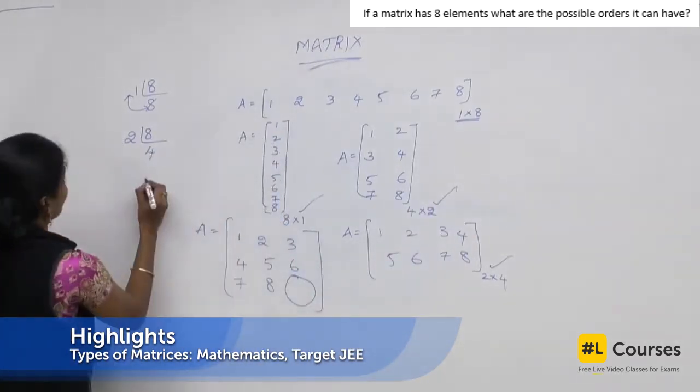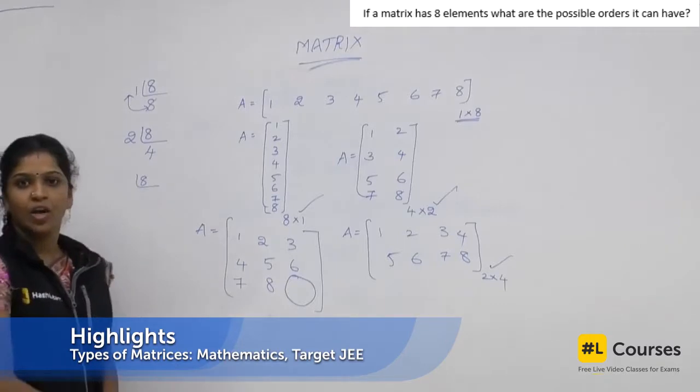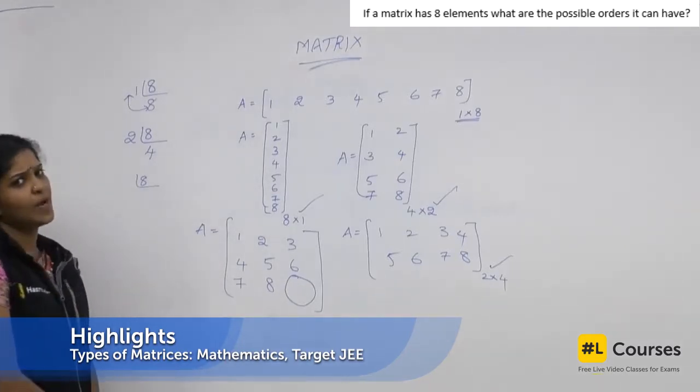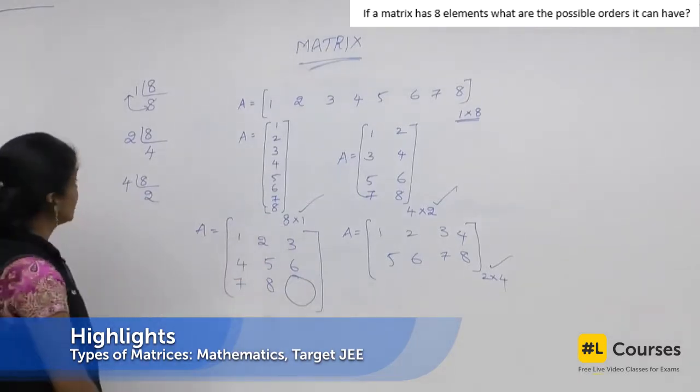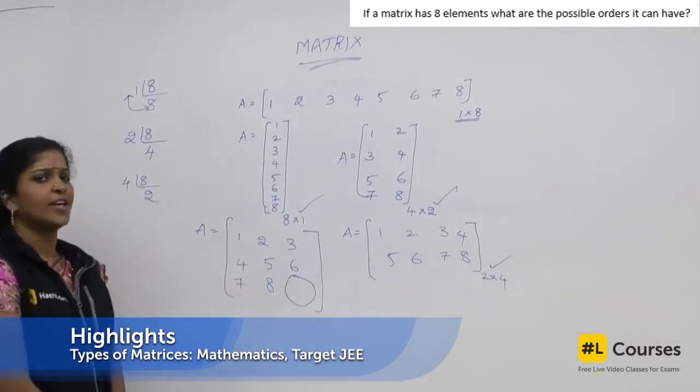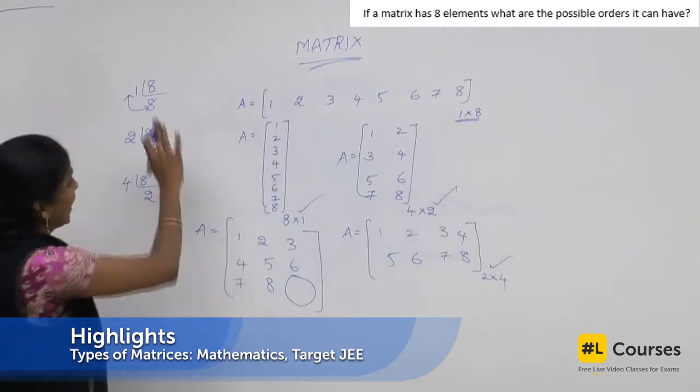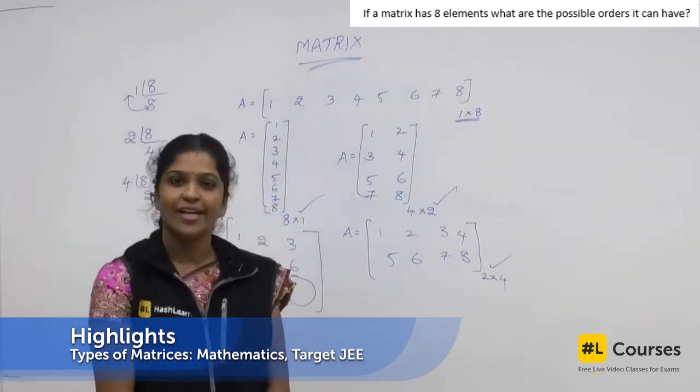Now, start thinking. Is it divisible by 3? No. Is it divisible by 4? We already done. 4, 2's are 8. Is it divisible by 5? No. 6? No. 7? No. 8? We already proved. Understood, right?